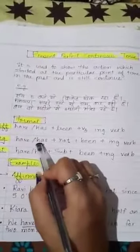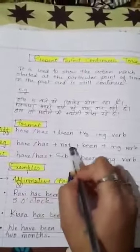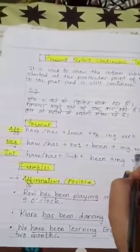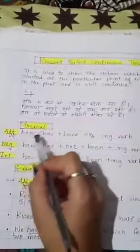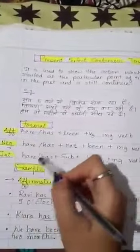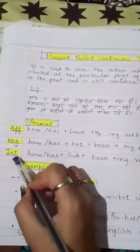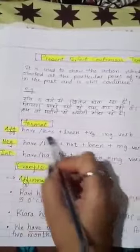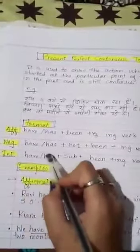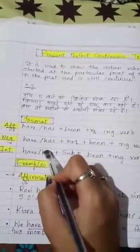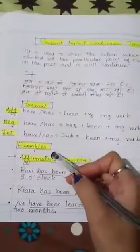For the negative form: have or has, plus not, plus been, plus the ing verb. The subject is used accordingly with have or has. For the interrogative form, have or has comes before the subject, because it is the helping verb. The rest remains the same: been plus the ing verb. Okay, let's see some examples so that you can understand.